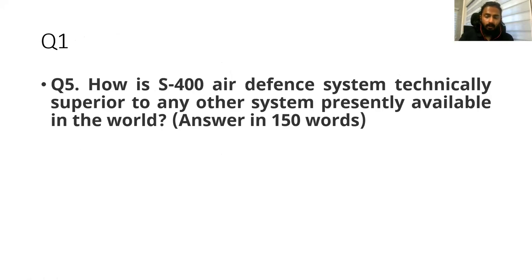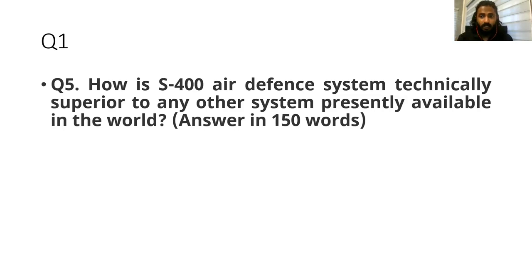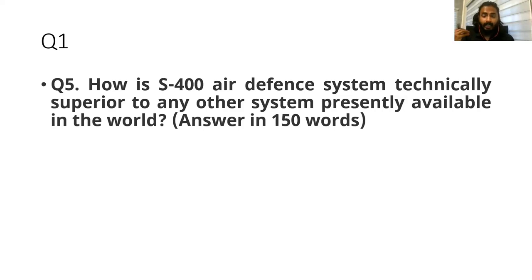The major air defense systems to compare are S-400 (Russia), THAAD — Terminal High Altitude Area Defense (US), and the Patriot air defense system (US). One key point: S-400 can engage any airborne threat, whereas THAAD is exclusively an anti-ballistic system with no anti-aircraft capability. THAAD cannot attack aircraft — it can only target ballistic missiles. This is one point of technical superiority.